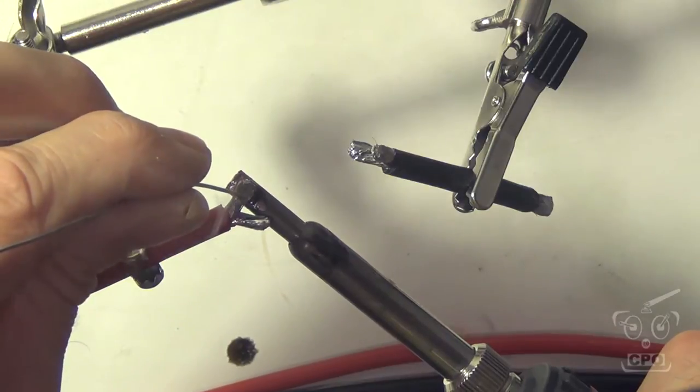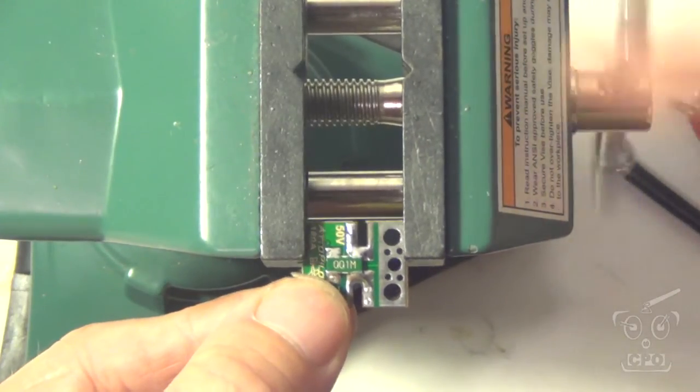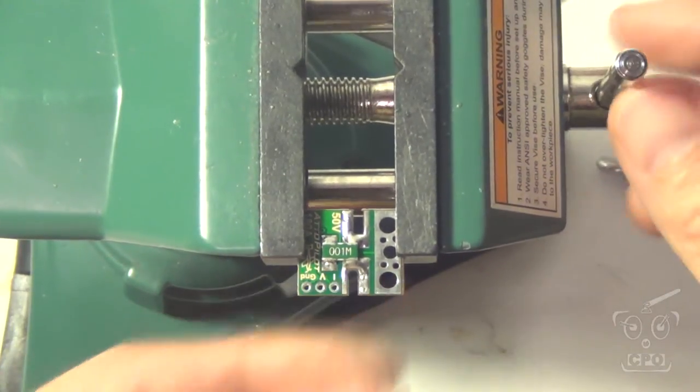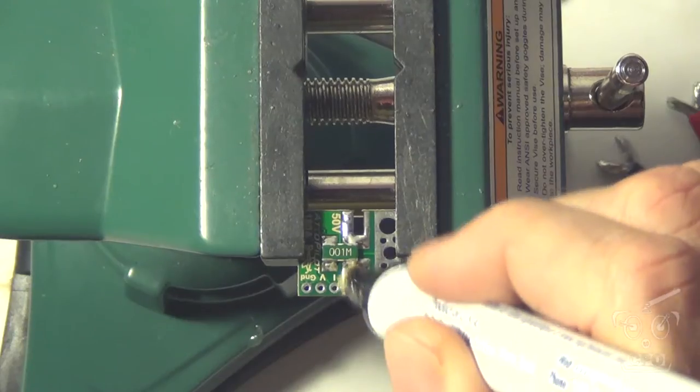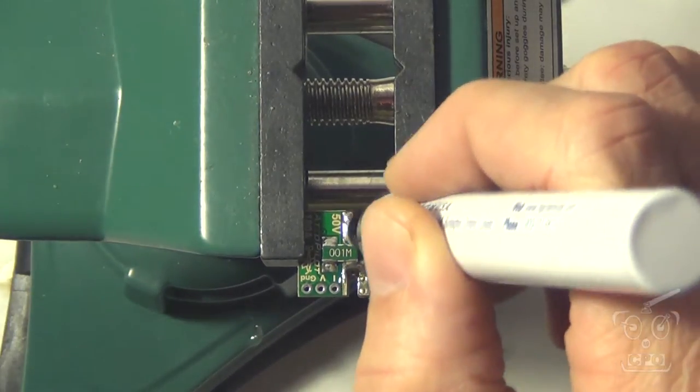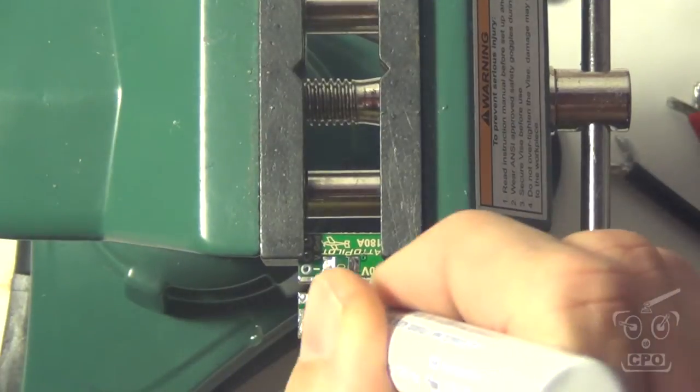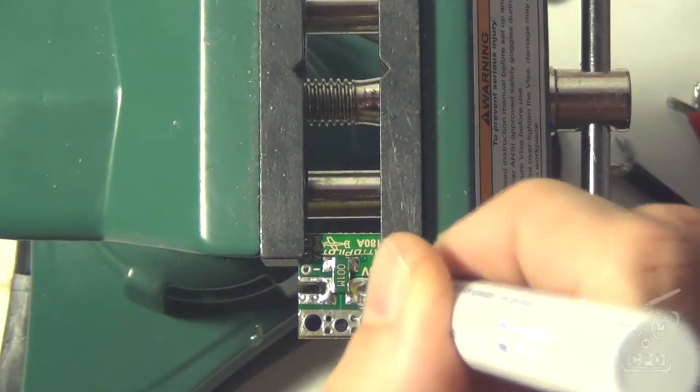All right, so once I get these wires tinned up, I'm going to use my handy little vice to hold everything in place while I work. Now, the first thing I want to do is add some flux, and I'm going to add solder to the existing pads on both sides.